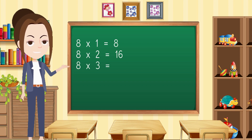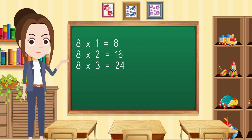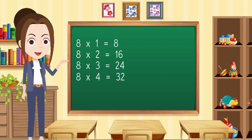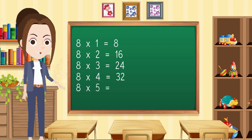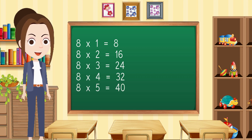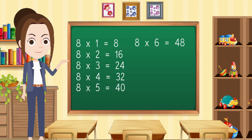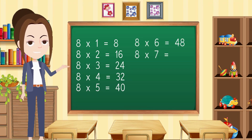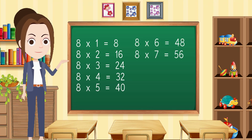Eight threes are twenty-four. Eight fours are thirty-two. Eight fives are forty. Eight sixes are forty-eight. Eight sevens are fifty-six.